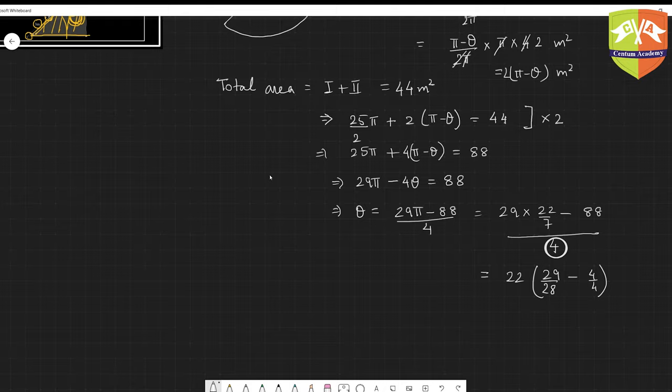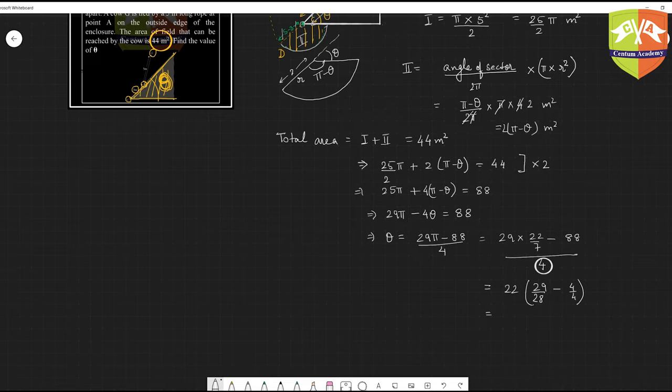This is 22 into 29 by 28 will be 1.035, and then minus 1. So this is 22 into 0.035. That means this will be 35 into 22, that will be around 0.77 radians.